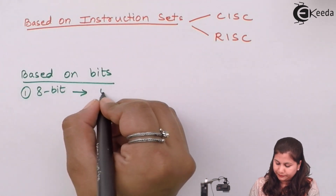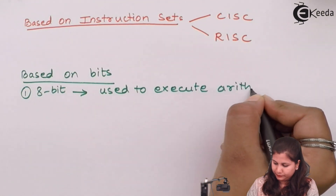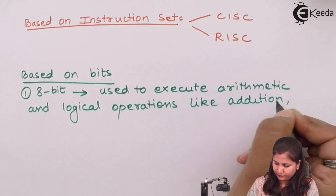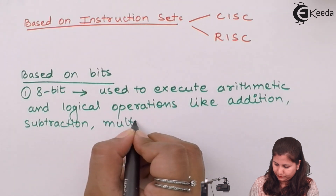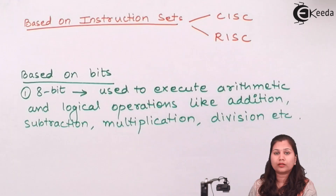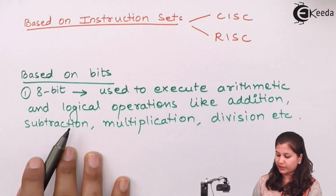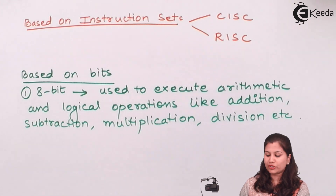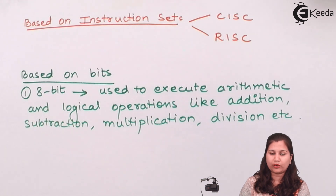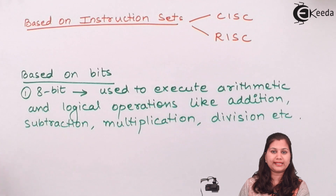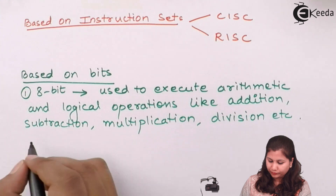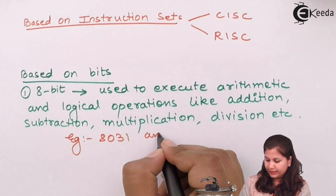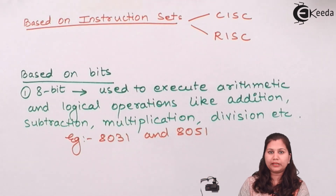8-bit microcontrollers are used to execute arithmetic and logical operations like addition, subtraction, multiplication, division, logical OR, and logical AND. These microcontrollers deal with data in the form of 8 bits. Examples of such microcontrollers are 8031 and 8051 — both are 8-bit microcontrollers.